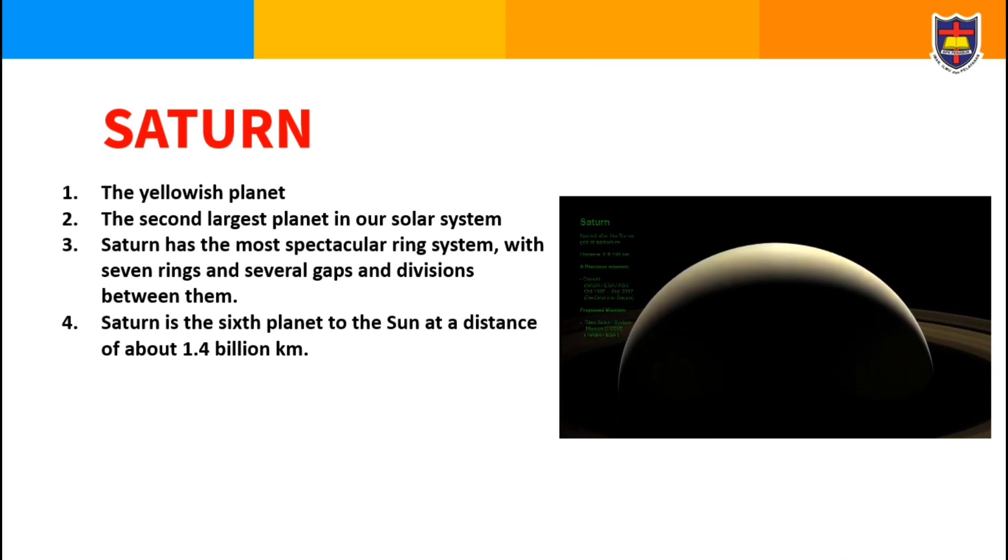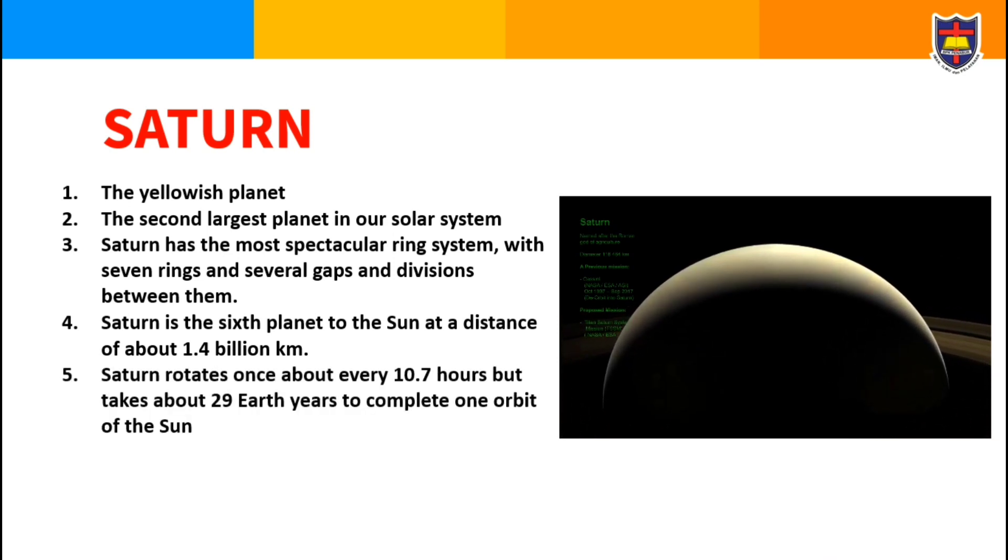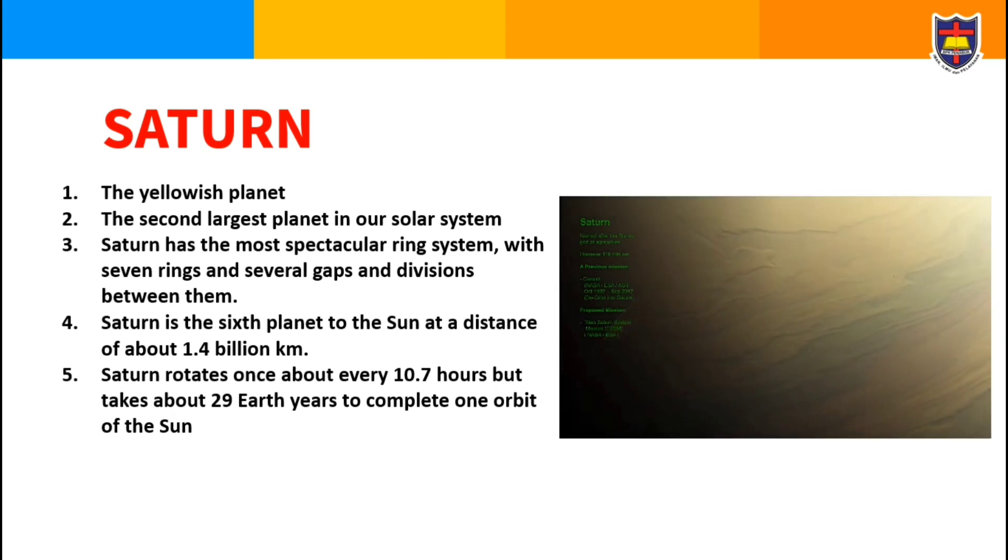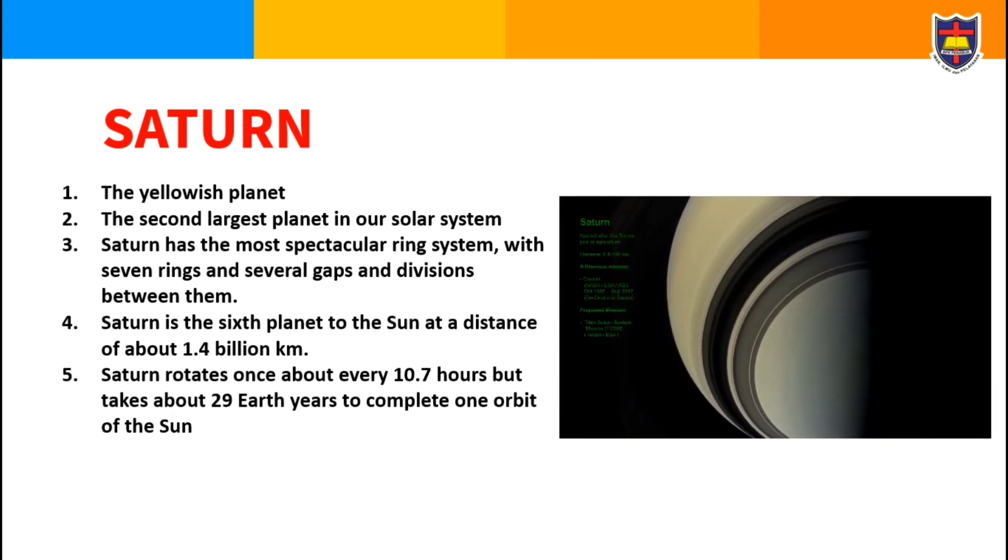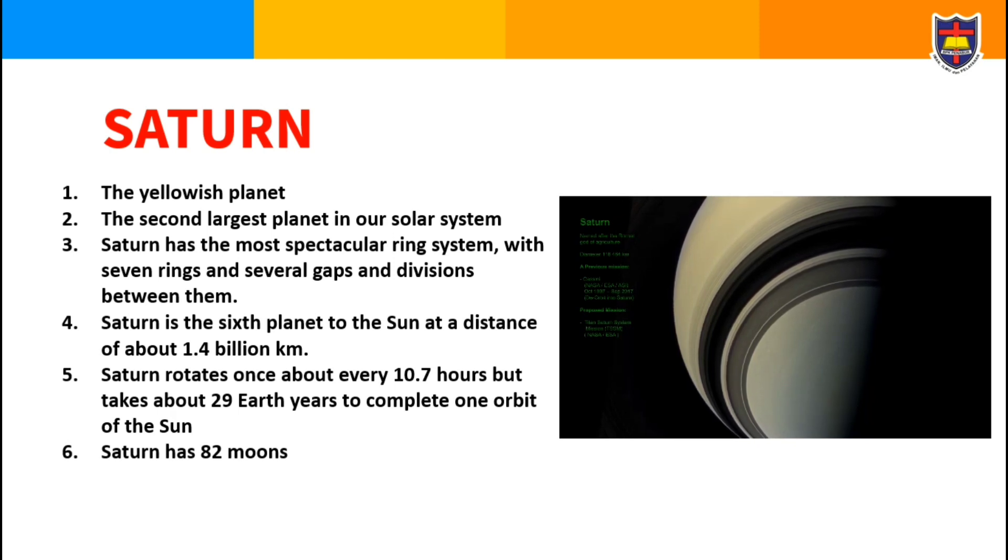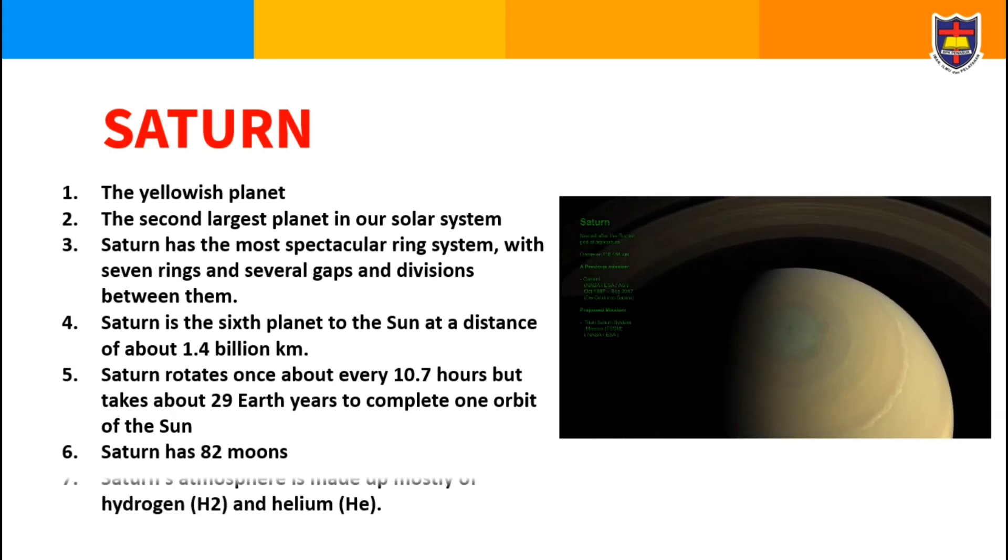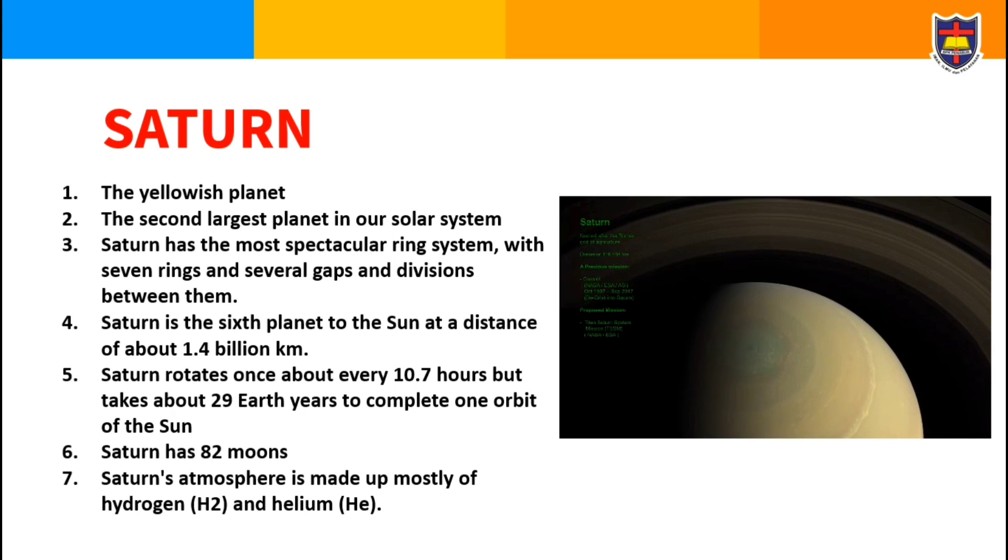Saturn rotates once about every 10.7 hours but takes about 29 Earth years to complete one orbit of the Sun. Saturn has 82 moons. Saturn's atmosphere is made mostly of hydrogen and helium.